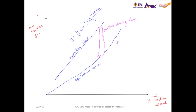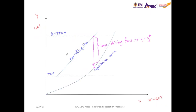We call this the positive driving force, where y — the mole fraction of A in gas — is larger than the mole fraction of A at equilibrium, or y*. The greater this difference becomes, the higher the mass transfer rate will be. So at the bottom of the column we'll have a large driving force, meaning a lot of A moves from gas to solvent. But as it goes up the column, the distance between the operating line and the equilibrium curve becomes less, causing a lower driving force and slower mass transfer rate.